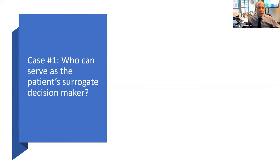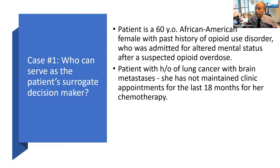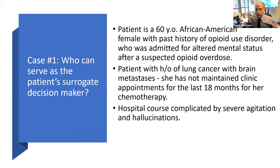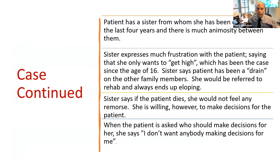Our first case is: who can serve as the patient's surrogate decision maker? The patient is a 60-year-old African-American female with a past history of opioid use disorder, admitted for altered mental status after a suspected opioid overdose. She has a history of lung cancer with brain metastasis discovered about two years ago; however, she has not maintained clinic appointments for the last 18 months for her oral chemotherapy. Her hospital course has been complicated by severe agitation and hallucinations, and psychiatry has determined the patient does not have capacity to leave against medical advice. The patient has a sister from whom she has been estranged for four years, and there is much animosity between them.